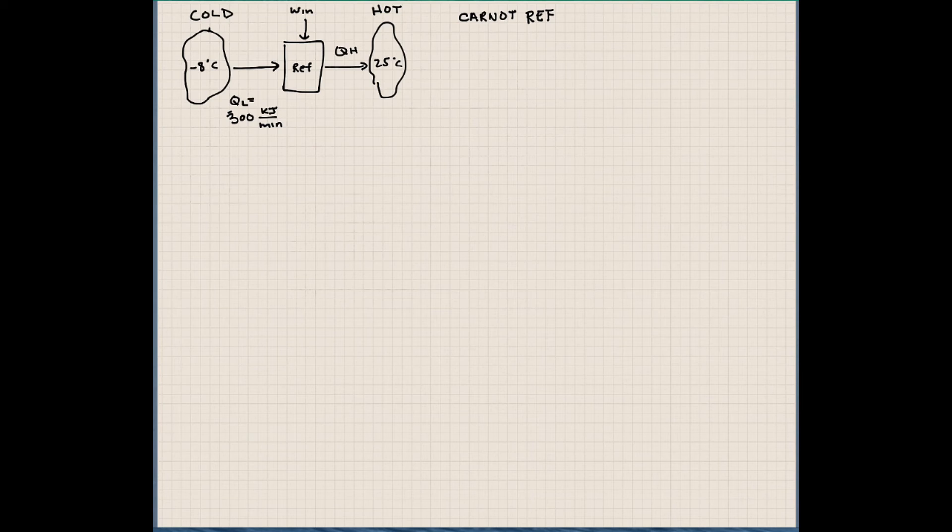I'm going to finish up Chapter 7 here with a Carnot refrigeration cycle. So here we have a refrigerator. The cold refrigerated part is at minus 8 degrees Celsius. It's absorbing heat from that cold source at 300 kilojoules per minute. And it's rejecting the heat to the hot temperature source, which is at 25 degrees Celsius.